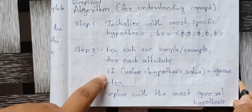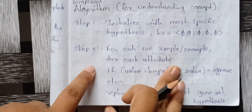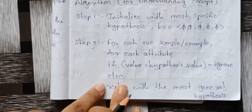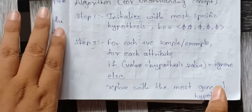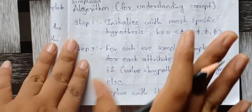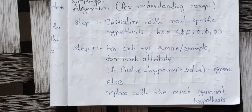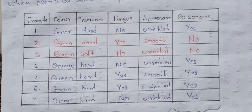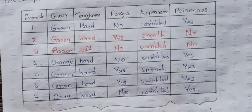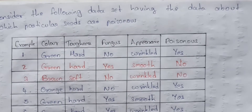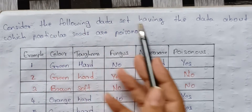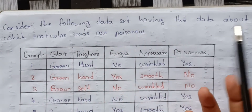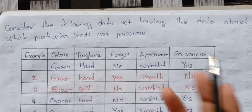For every positive example, for each attribute of that positive example, if the attribute is not matched, replace with the general hypothesis value. Don't worry — we will show you this with data. Consider the following dataset having data about which particular seeds are poisonous.